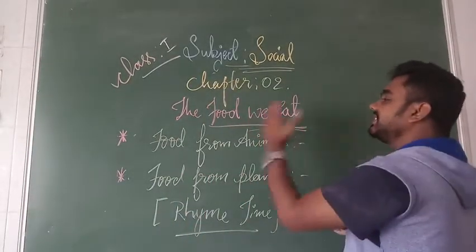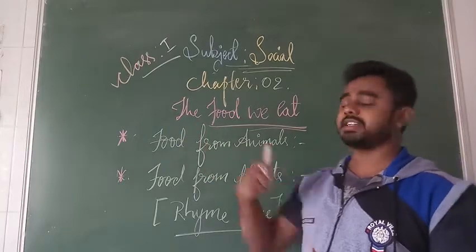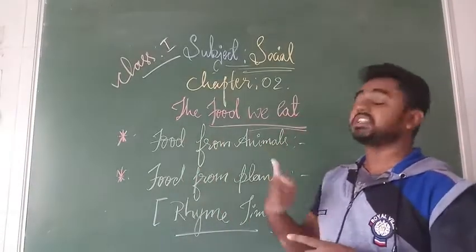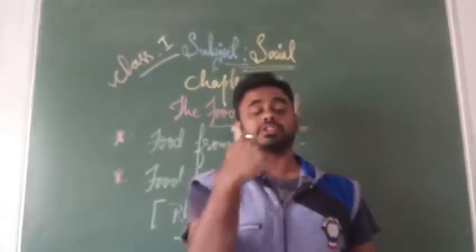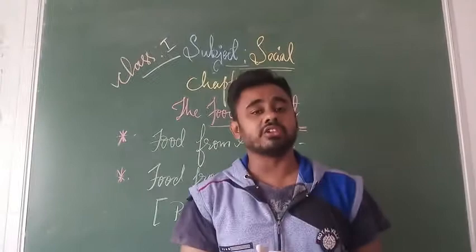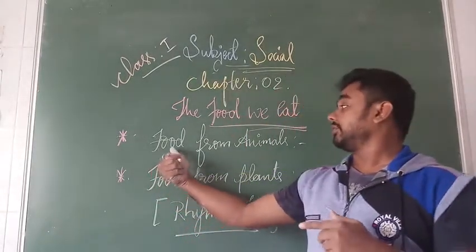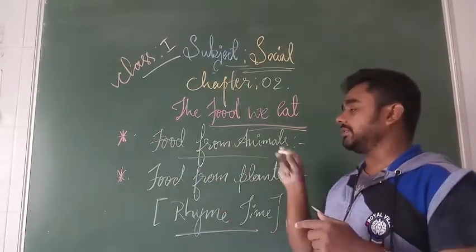So in the previous class, your social studies second chapter — the food we eat — we went through two concepts. One is the food we get from animals.